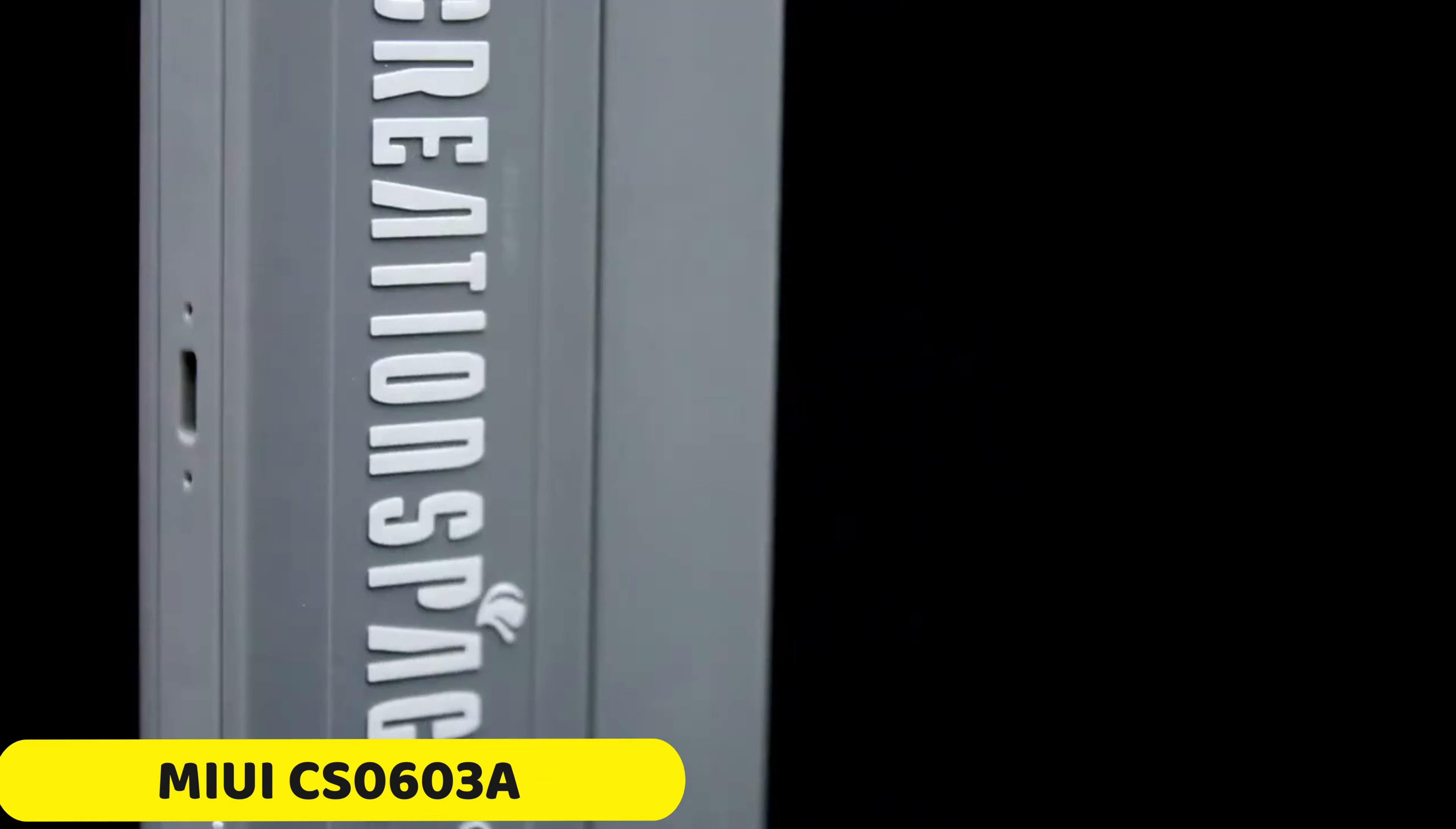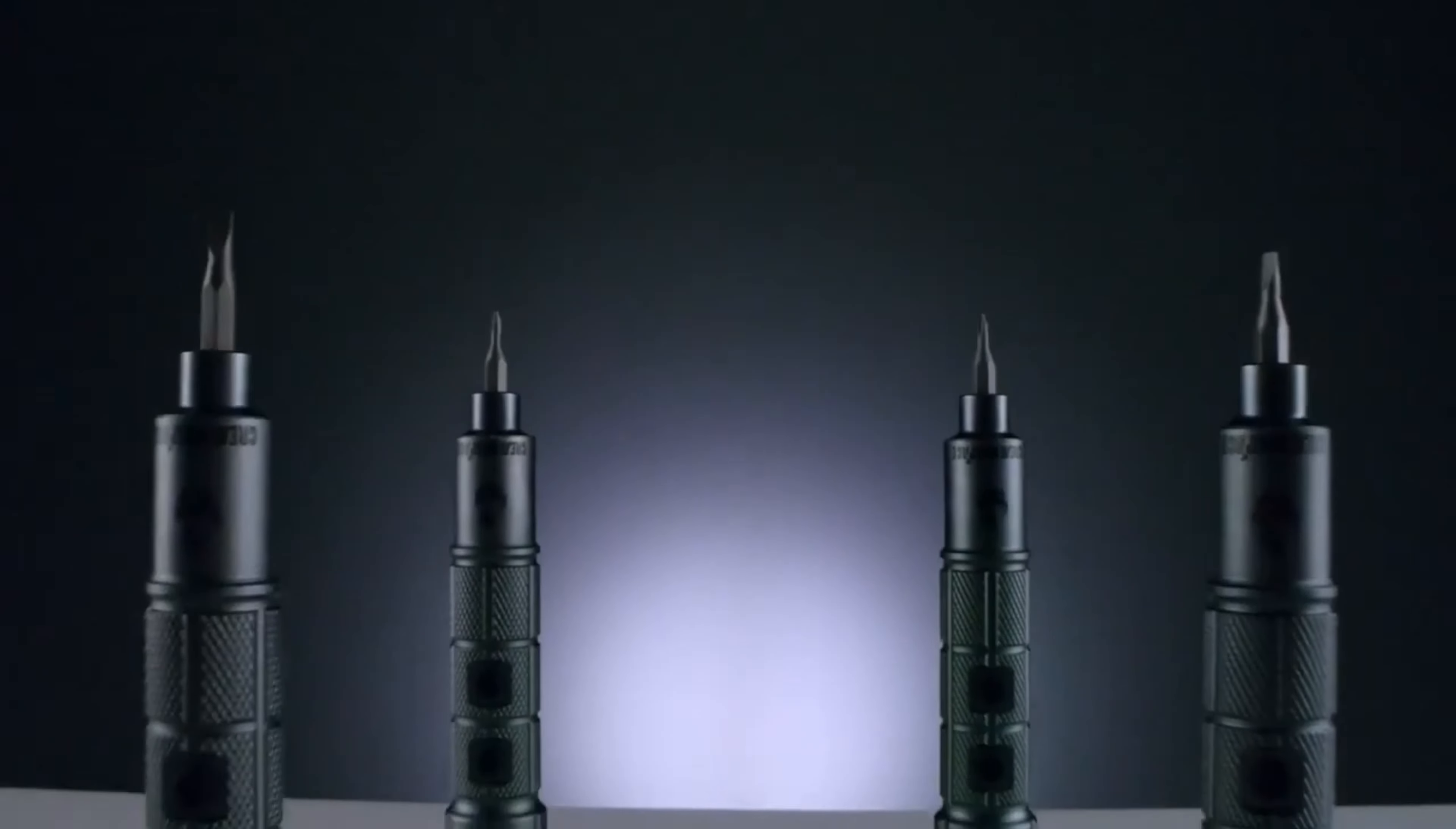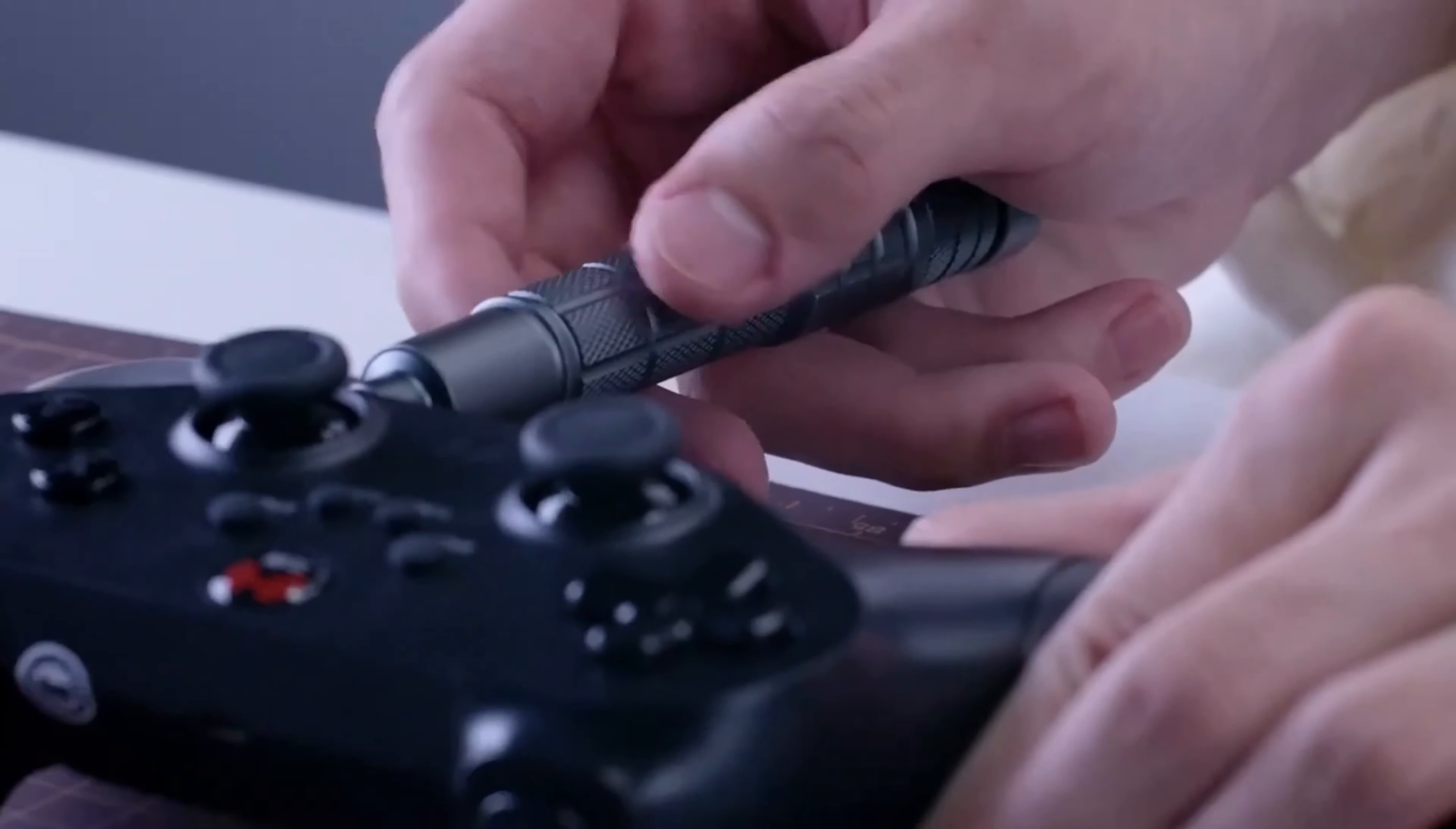Number 5: Myui CS0603A Electric Screwdriver Set. The Myui CS0603A Electric Screwdriver Set by Xiaomi is a compact and powerful cordless screwdriver designed for home DIY tasks. It weighs just 450 grams and has an impressive maximum torque of 0.35 Nm, making it efficient and precise even in tougher materials.